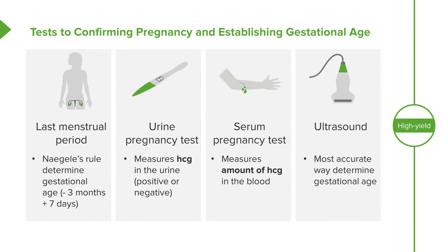Speaking of ultrasound, this is the most accurate way to determine gestational age. We expect with ultrasound in the first trimester that when we measure the fetus from the crown rump length, it will be within one week of the last menstrual period. We'll talk about that in a little bit more detail as we go throughout this slide. This is a high-yield amount of information — remembering how we confirm pregnancy and establish gestational age using these four tests.